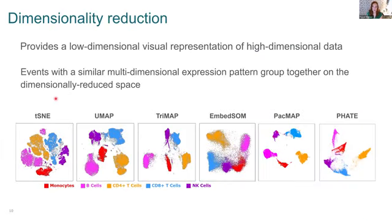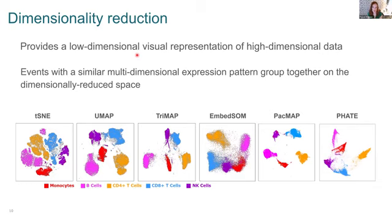After running a clustering tool, you may want to visualize those populations on a dimensionally reduced plot. Dimensionality reduction gives a low-dimensional representation of high-dimensional data. Your data exists in as many axes as parameters you have — if you have an 18-color panel, your data exists in 18 different dimensions. We can't visualize that on a computer screen, but we can compress it into a biaxial plot representation, grouping events with similar expression patterns together on that dimensionally reduced space.